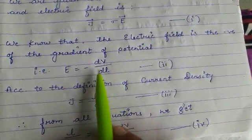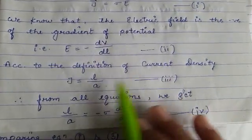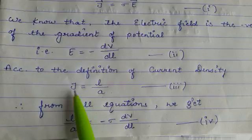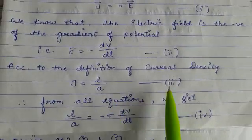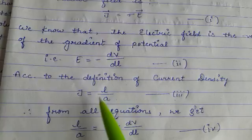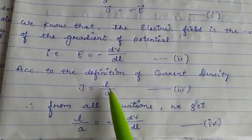According to the definition of current density, we can say that J equals I over cross section area. That is, J equals I upon A, marked as equation three.